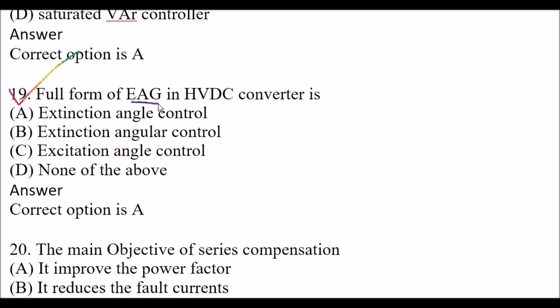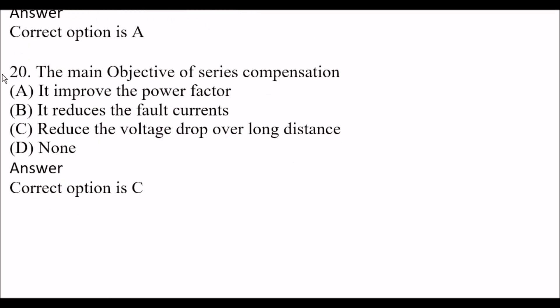Next question: Full form of EAG in HVDC converter is — Option A: Extinction Angle Control. Option B: Extinction Angular Control. Option C: Excitation Angle Control. Option D: None of the above. The right answer is Option A, Extinction Angle Control. Next question: The main objective of series compensation is — Option C: Reduce the voltage drop over long distances — is the right answer. Series compensation's main objective is to reduce voltage drop over long distances.